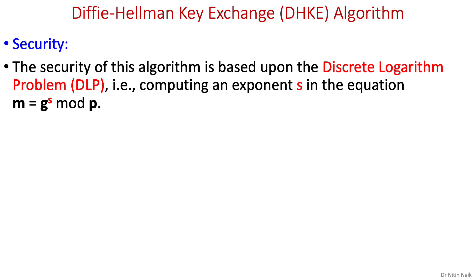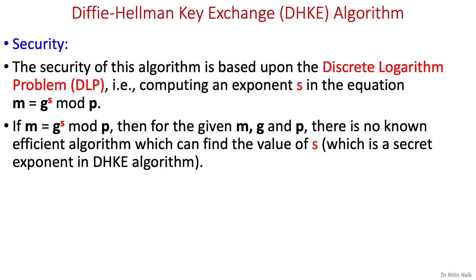Why it is secure? The security of this algorithm is based upon the discrete logarithm problem, DLP. That means computing an exponent s in the equation m equals g to the power s mod p is very difficult. So let's elaborate this. If m equals g to the power s mod p, then for the given m, g and p, there is no known efficient algorithm which can find the value of s. And that is a secret exponent in Diffie-Hellman key exchange algorithm.